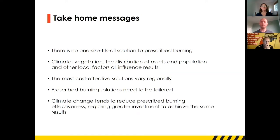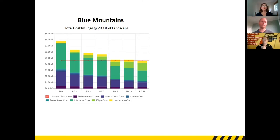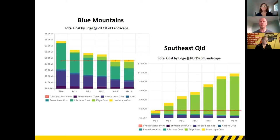Definitely one of the main messages from our project is there is no one-size-fits-all solution to prescribed burning. All local factors — climate, vegetation, distribution of assets — influence the risk mitigation available. In particular, the most cost-effective solutions are not the same everywhere. In the Blue Mountains, for example, with 1% of the landscape you're getting a lower total cost as you move to more edge treatment. But over in South East Queensland, the pattern goes in the opposite direction — more edge treatment is not giving you more bang for your buck.